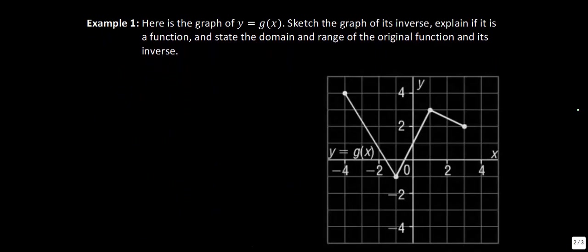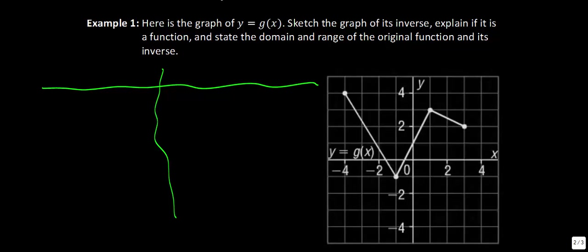Example 1 states: here's the graph of y equals g of x. Sketch the graph of its inverse, explain if it is a function, and state the domain and range. We've done that a lot in this unit for the original function and its inverse. So the first thing we'll do is set up a table of values. We have our first function y equals g of x, and its inverse means x equals g of y — our x and y just change.